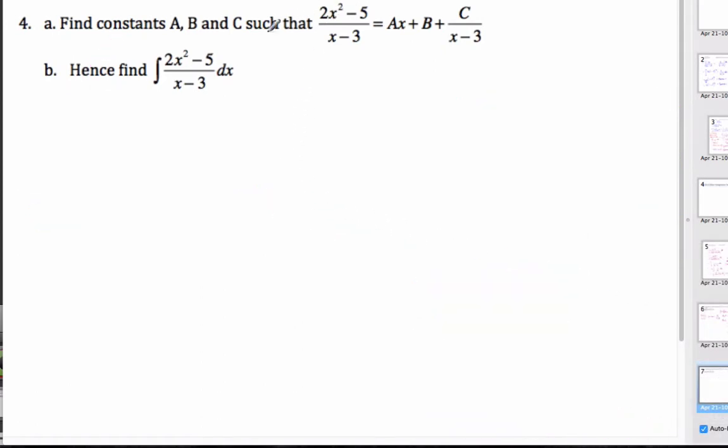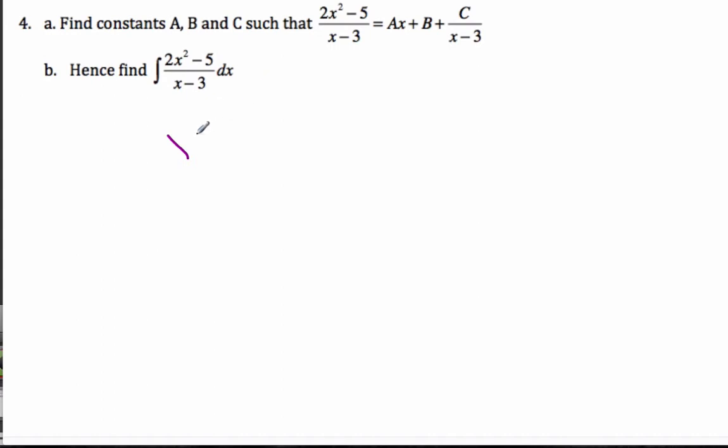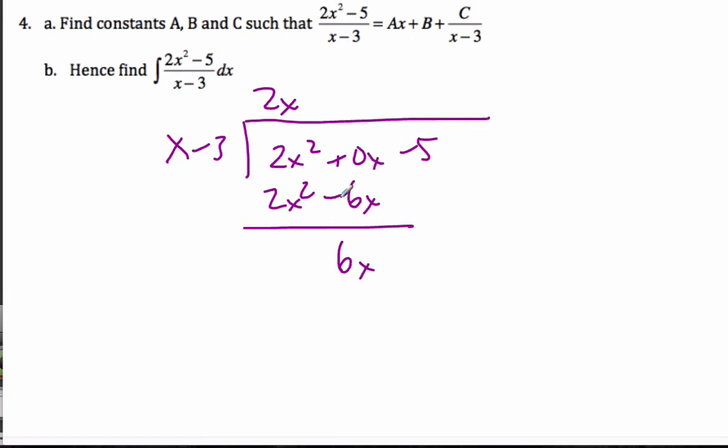Another technique I could have done is I could have just done my long division, if you know long division. 2x squared plus 0x minus 5. And so this is 2x, 2x squared minus 6x. Subtract them. I get 0 plus 6x because it's 0 minus negative 6x, minus 5. Multiply by 6.